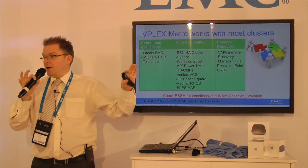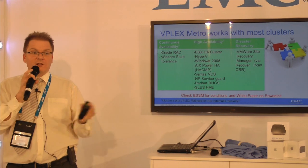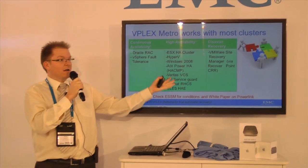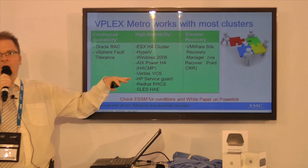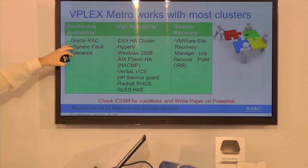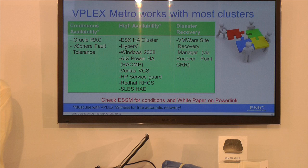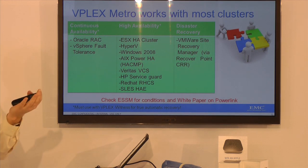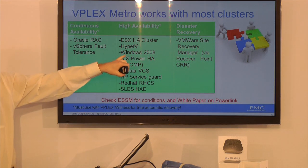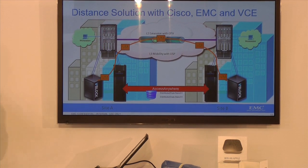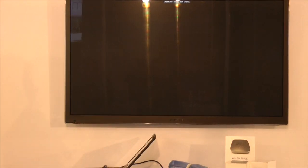vPlex isn't just for VMware — it works with pretty much every cluster out there, and every cluster shown simply works out of the box. You can take the cluster application and deploy it even on bare metal without VMware and have distributed HA. For example, Oracle RAC is a continuously available active-active host cluster — Oracle certifies running it on vPlex Metro so Oracle RAC runs in both locations simultaneously. If you lose a data center, there's no interruption. You can also use Hyper-V, Windows 2008, and others.